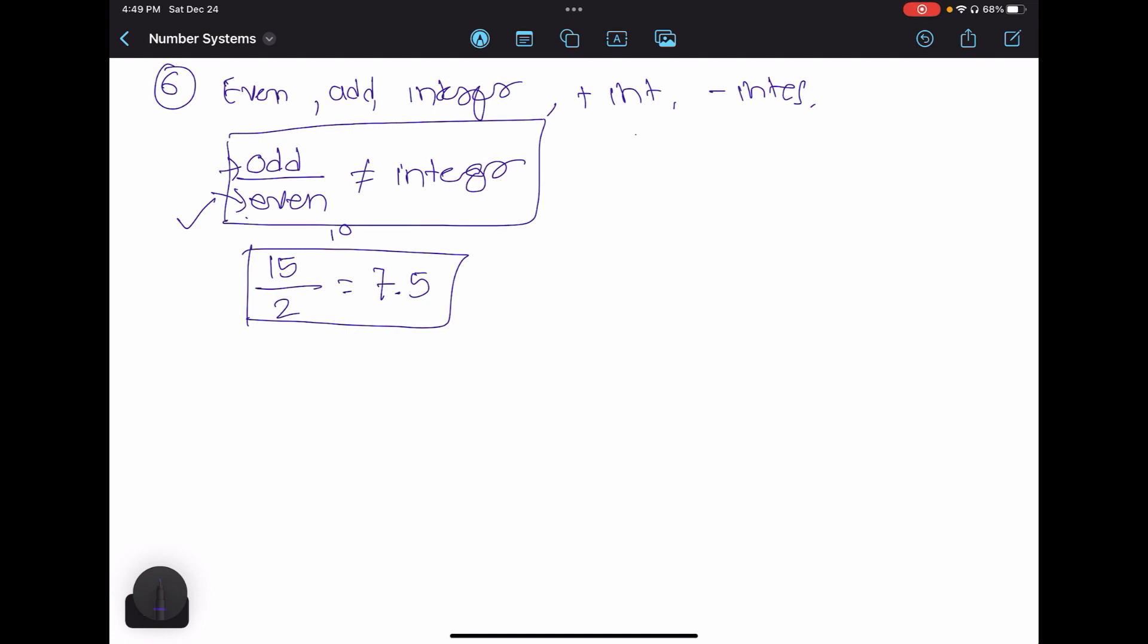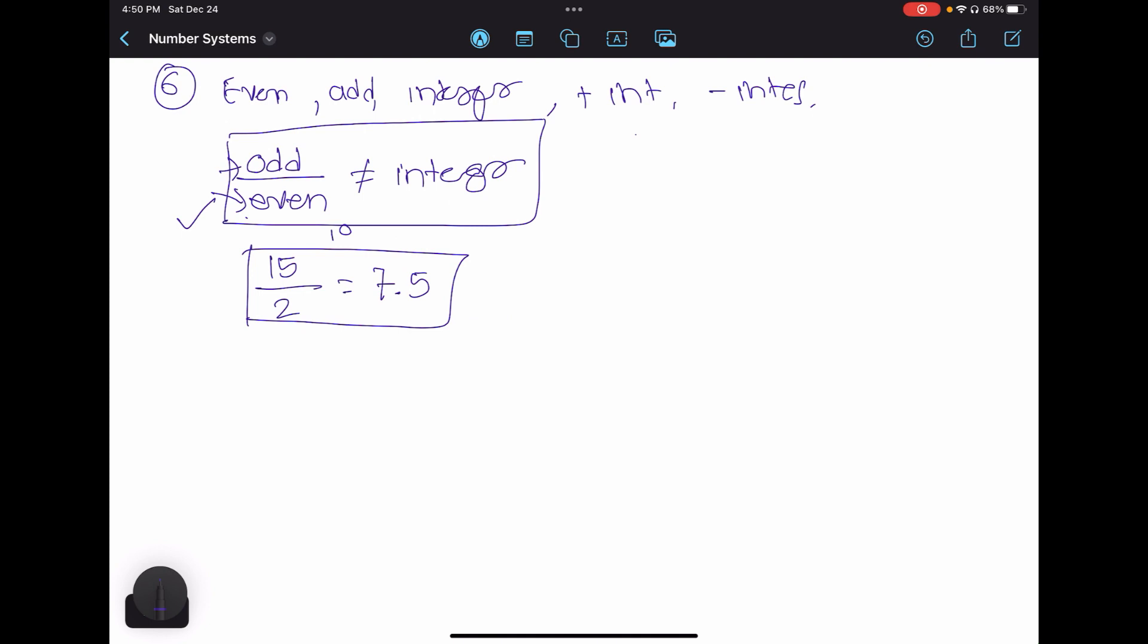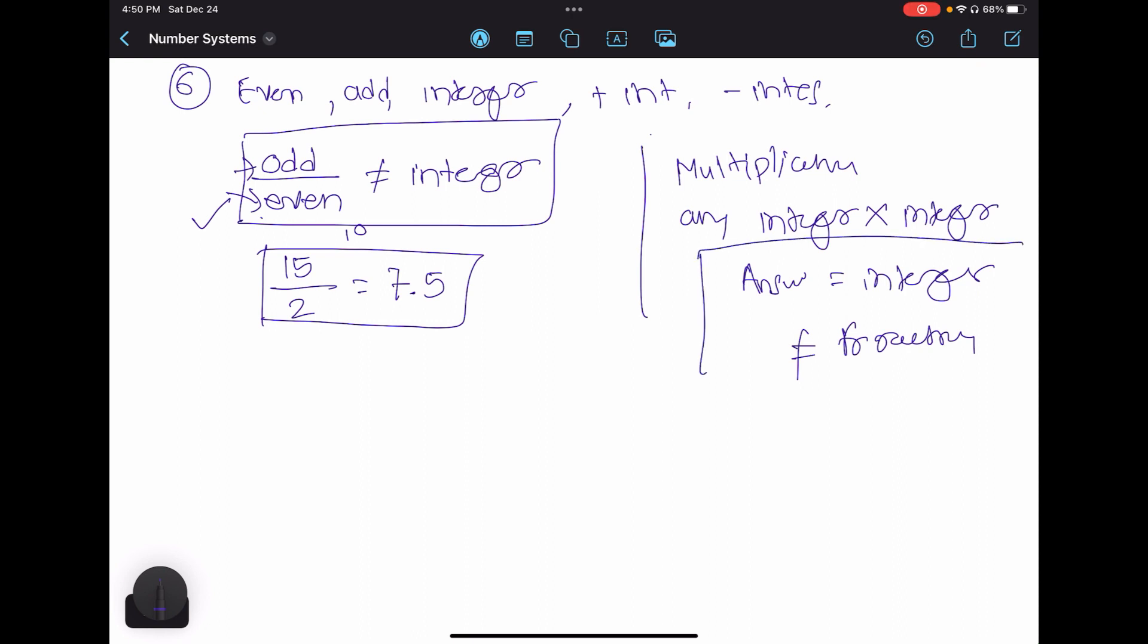Similarly, there is one more thing we have to remember when we perform multiplication. Any integer when we multiply by integer, the answer should be integer and it cannot be fraction. This is one of the rules. This one we will even use in our upcoming problems.